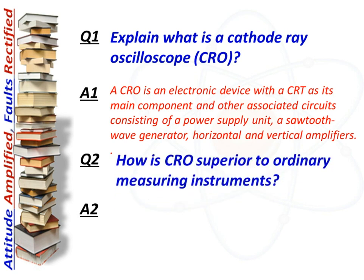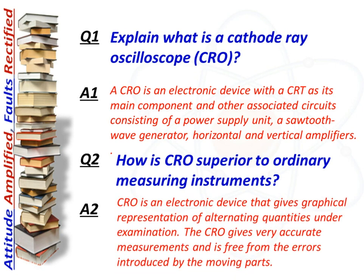Next question: how is CRO superior to ordinary measuring instruments? Answer: CRO is an electronic device that gives a graphical representation of alternating quantities under examination. The CRO gives very accurate measurements and is free from the errors introduced by moving parts.